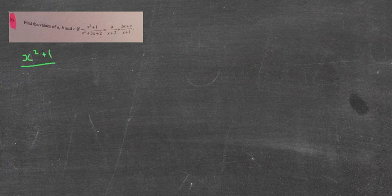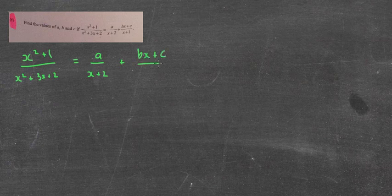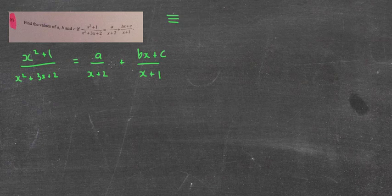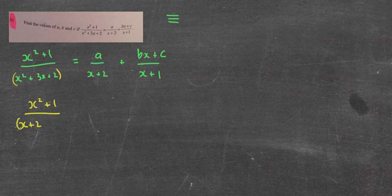The next one — this is a tough question, not particularly nice. x squared plus 1 over x squared plus 3x plus 2 equals a over x plus 2 plus bx plus c all over x plus 1. You've been used to questions like ax squared plus bx plus c. Where do I go from here? I reckon factorising the bottom part, because I can't factorise the top. I'll factorise that as x plus 2 times x plus 1. What confirms the right direction is that the other side also has x plus 2 and x plus 1.